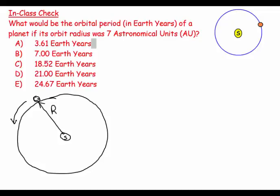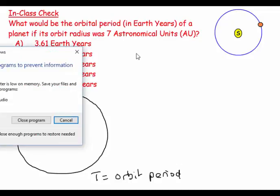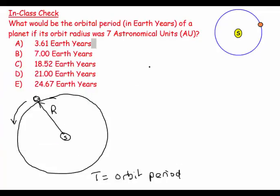T equals the orbital period. Kepler worked with Tycho Brahe, and Kepler basically took the data that Tycho Brahe and his assistants had collected over a lifetime of naked-eye measurements on the positions of the planets relative to the stars, and was able to figure out the mechanics of the solar system.